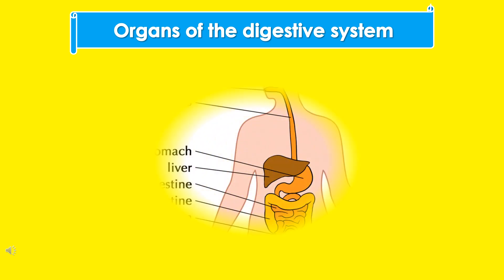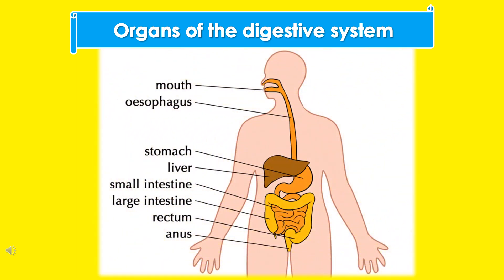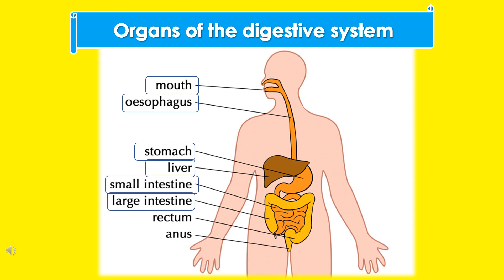Organs of the digestive system include: mouth, esophagus, stomach, liver, small intestine, large intestine, rectum, and anus.